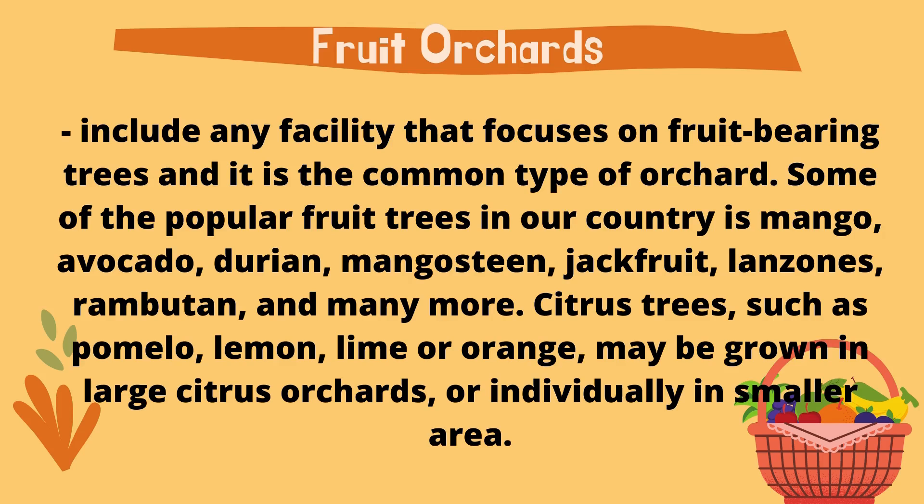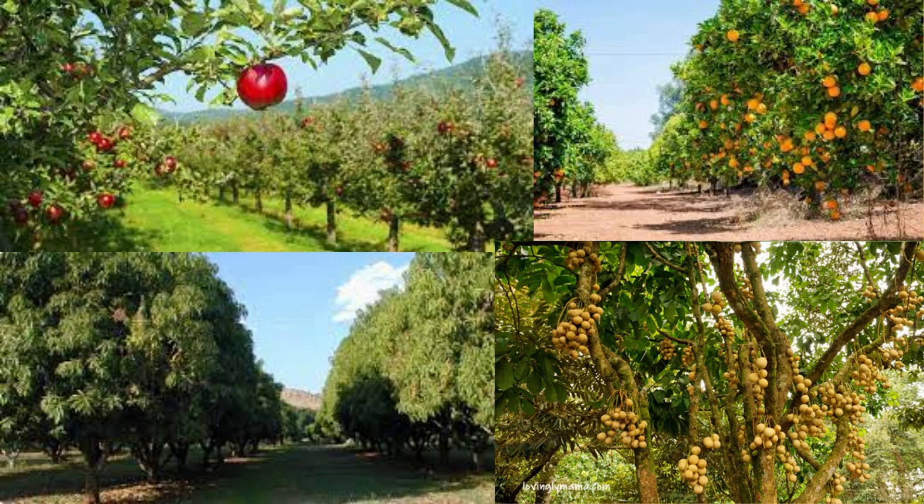First, we have fruit orchards. It includes any facilities that focus on fruit bearing trees and it is the most common type of orchard. Some of the popular fruit trees in our country are mango, avocado, durian, mangosteen, jackfruit, lanzones, rambutan, and many more. Citrus trees such as pomelo, lemon, lime, or orange may be grown in large citrus orchards or individually in smaller areas.